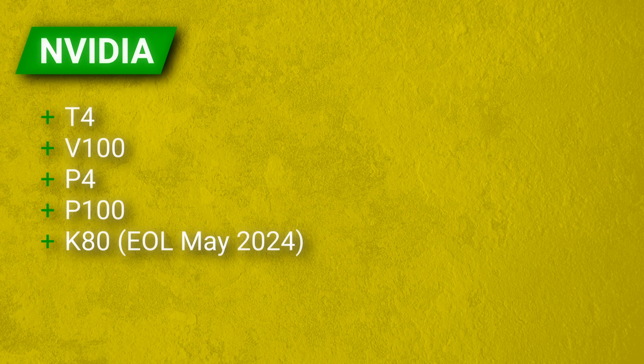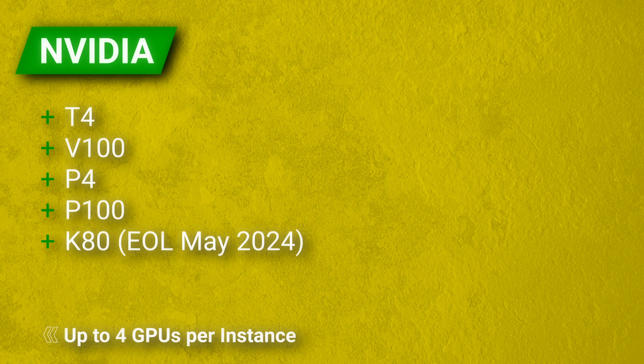NVIDIA GPUs include T4, V100, P4, P100, and the K80 until it goes end of life in May 2024, and each instance can support up to 4 GPUs.